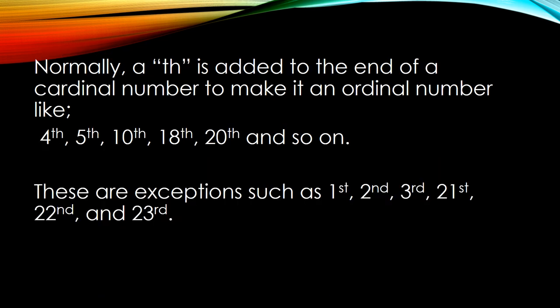In ordinal numbers, TH is added to the end of a cardinal number. The cardinal numbers are one, two, three, and so on. When we make them ordinal, we add TH. For example, four becomes fourth, five becomes fifth, ten becomes tenth, eighteenth, twentieth, and so on.